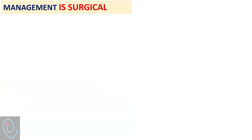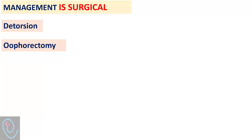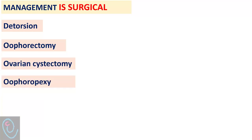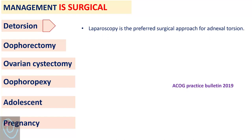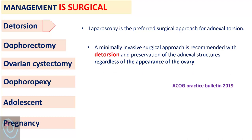Management of ovarian torsion is surgical. During surgery, the preferred option is detorsion versus oophorectomy. Laparoscopy is the preferred surgical approach for adnexal torsion. A minimally invasive surgical approach is recommended with detorsion and preservation of adnexal structures regardless of the appearance of the ovary.